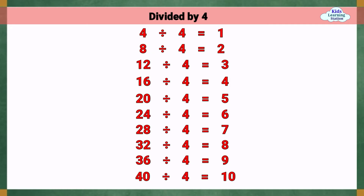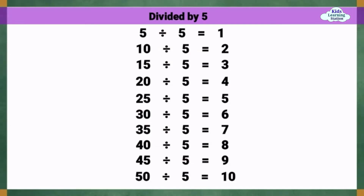Divided by 5. 5 divided by 5 equals 1. 10 divided by 5 equals 2. 15 divided by 5 equals 3. 20 divided by 5 equals 4. 25 divided by 5 equals 5. 30 divided by 5 equals 6. 35 divided by 5 equals 7. 40 divided by 5 equals 8. 45 divided by 5 equals 9. 50 divided by 5 equals 10.